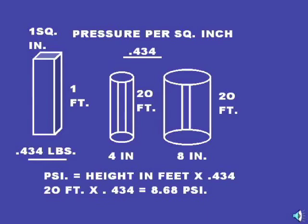Take a look at the 8 inch pipe. It's 20 feet high. Now, the pressure per square inch would be the same as the 4 inch, because we're only measuring a column of water one square inch, 20 feet high. This is very important.